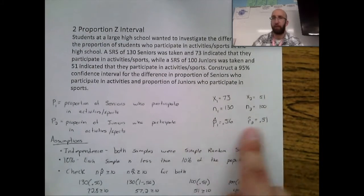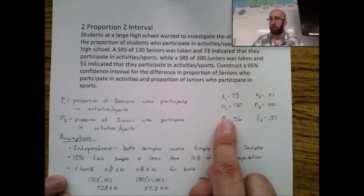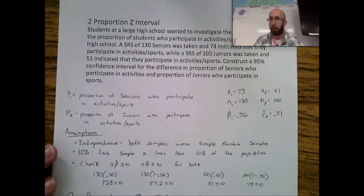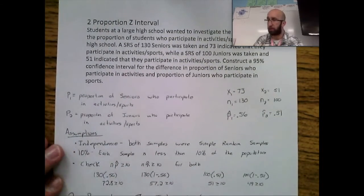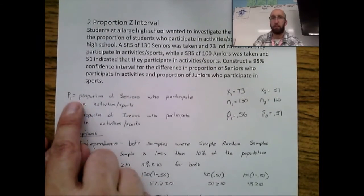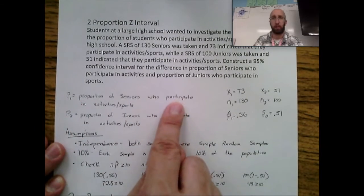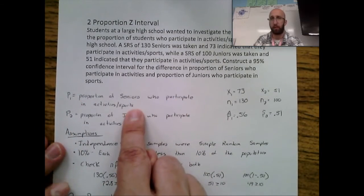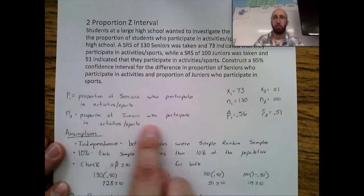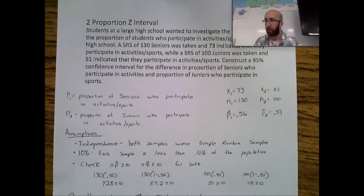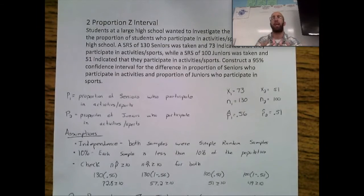First step in PANIC is parameters. P1 is the proportion of seniors who participate in activities and sports. P2 is the proportion of juniors who participate in activities and sports. That's what I'm trying to find the difference of before I can do the mathematics around this problem.